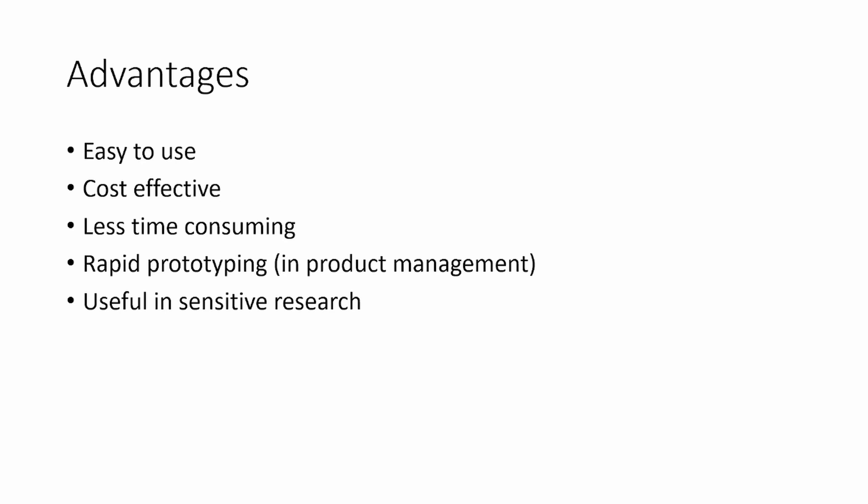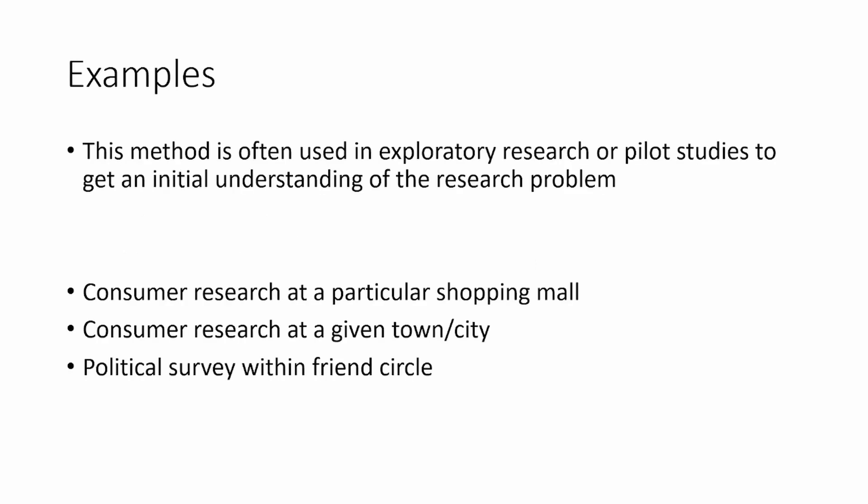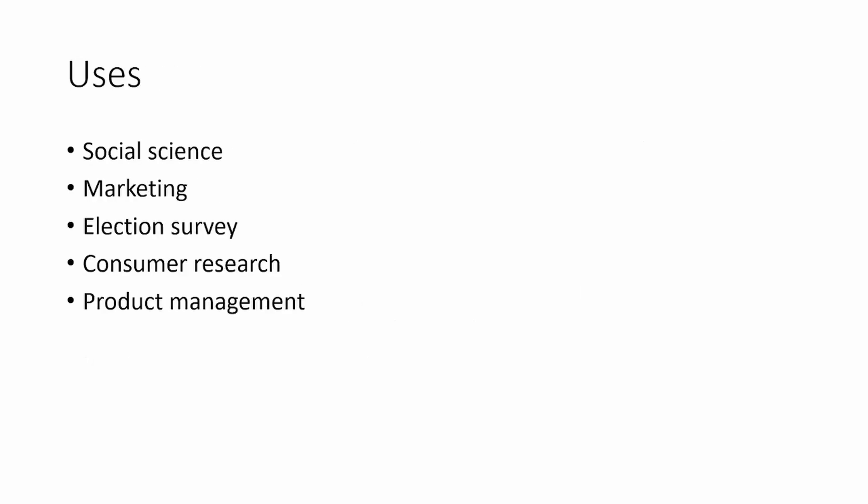In terms of where accidental sampling is used: it's used in social science, especially in political science, sociology, and economics. It's also used heavily in marketing research and consumer research in particular. Political parties use it for election surveys, and it's also quite heavily used nowadays by e-commerce companies.